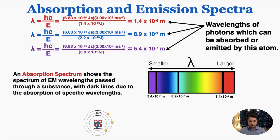We call this an absorption spectrum. An absorption spectrum shows the spectrum of electromagnetic wavelengths passed through a substance — a collection of atoms — with dark lines due to the absorption of specific wavelengths. If I pass electromagnetic waves of every possible wavelength through the substance and measure which wavelengths come out the other side, almost all wavelengths make it through, but a few very specific wavelengths do not, causing black lines to appear on the diagram. This diagram is called an absorption spectrum for that specific atom.